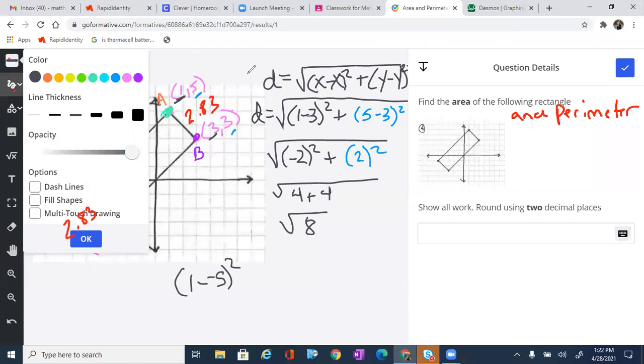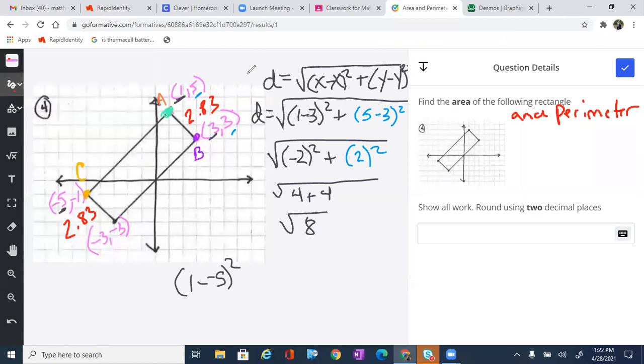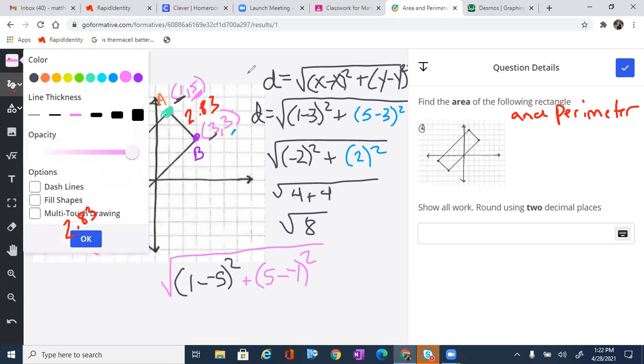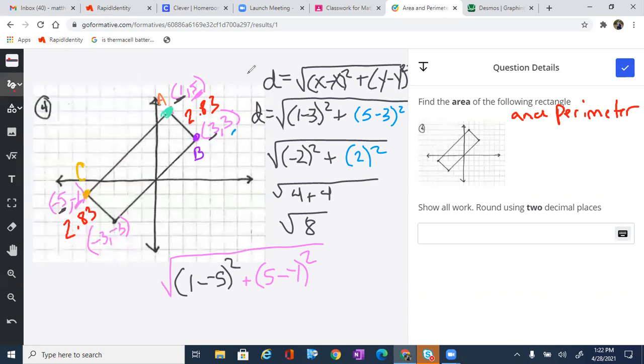Then I'm going to add the difference of those y's. So 5 and negative 1. So I'm going to say plus 5 minus negative 1 squared. Once that's done, I'm going to take the square root. Let's go through and simplify everything out. So 2 negatives make a positive. So 1 plus 5 is 6 squared. Plus 2 negatives here make a positive. So that's 5 plus 1, which is 6 squared.